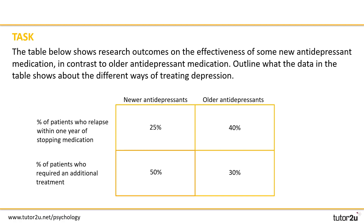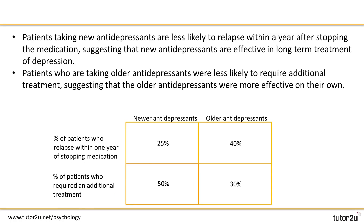For this task you've got a table of data on the screen and your job is to outline what the data in the table shows us about different ways of treating depression. A question like this requires you to really interpret the data accurately and look for some patterns and trends. Pause the video for five minutes while you allow yourself enough time to look at this very carefully.